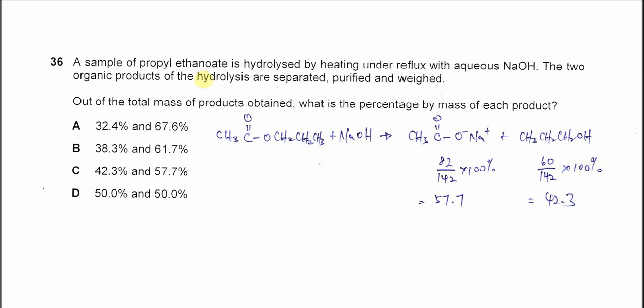Question 36. A sample of propyl ethanoate is hydrolyzed by heating under reflux with aqueous sodium hydroxide. The two organic products of the hydrolysis are separated, purified and weighed.